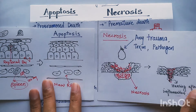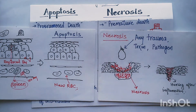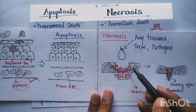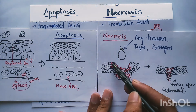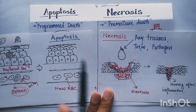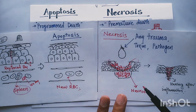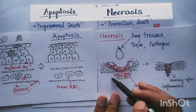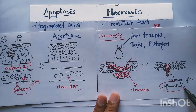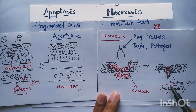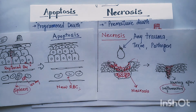Whereas in necrosis, due to any trauma, toxin, or pathogen, there is injury to tissue, and this injury causes the death of a large number of cells. Here in apoptosis it is only a single cell, but in necrosis many cells are involved. These cells are destroyed and the tissue is repaired by an inflammatory reaction, so there is always inflammation in necrosis, and healing takes place after some time.